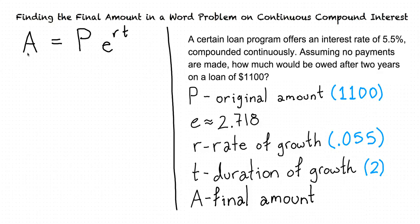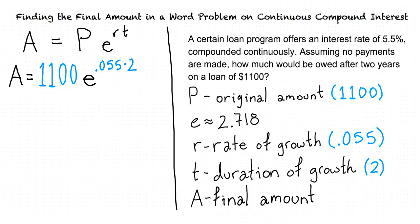So instead of A equals P times E to the power of RT, we can write this as A equals 1,100 times E to the power of 0.055 times 2. In order to evaluate this, it's a good idea to enter the expression into a calculator using the E button for E. You could also simplify this one step at a time using the order of operations.